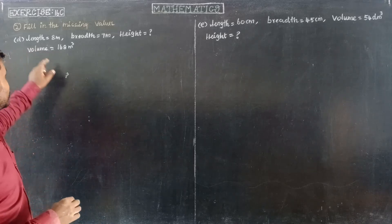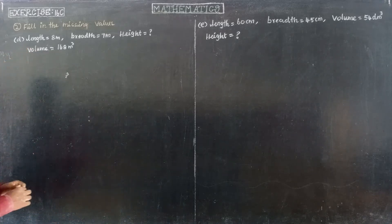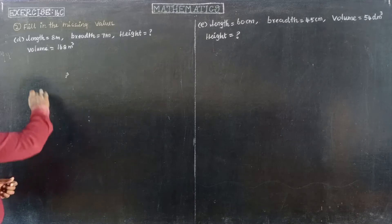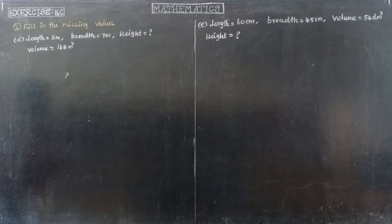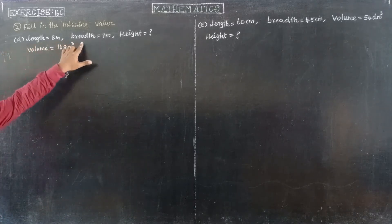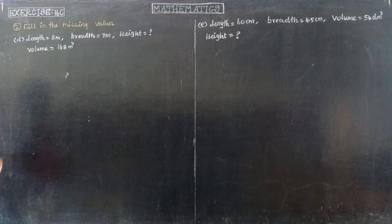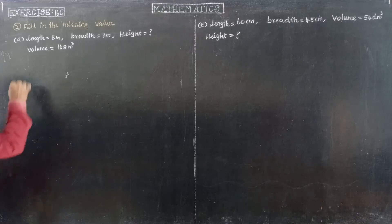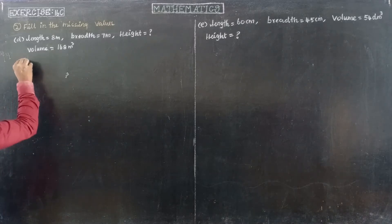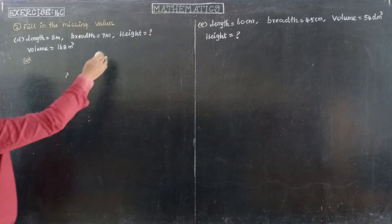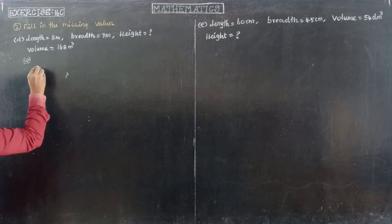Exercise 16C, question number 2 — find the missing values, subdivisions D and E. For subdivision D: length is 8 meters, breadth is 7 meters, height is unknown. The volume is 168 meter cube. The given cuboid's length, breadth, and volume are given. So what is the height of the cuboid? This is the question.